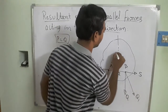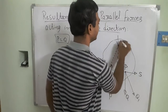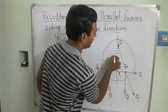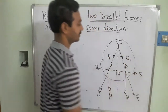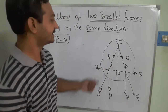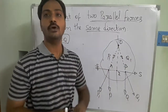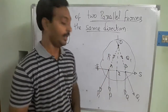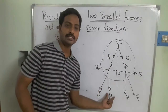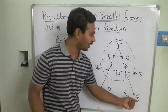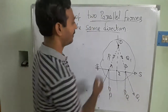I am extending the lines of action of P1 and Q1 in their respective directions. Where these two lines intersect, I call that point O. Point O consists of both P1 and Q1. Once P1 reaches and intersects at point O, I resolve the forces into X and Y components. For P1, the horizontal component is S and the vertical component is P. For Q1, the vertical component is Q and the horizontal component is S.